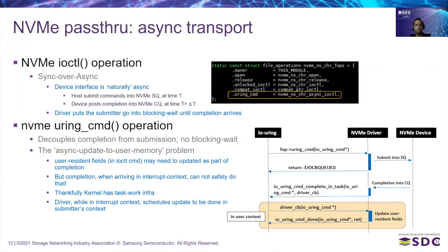One problem worth mentioning is the sync update to user memory. If an IOCTL command has fields that need to be updated during IO completion, those fields are in user space and cannot be touched while running in interrupt context — and typically IO completions arrive in interrupt context. To solve that, the NVMe driver sets up a callback to do all that update and supplies it to io_uring. io_uring then sets up a task_work, which is the kernel's mechanism to schedule work into a user space task context. With that, the driver-supplied callback gets executed in the task context and the update can be done.